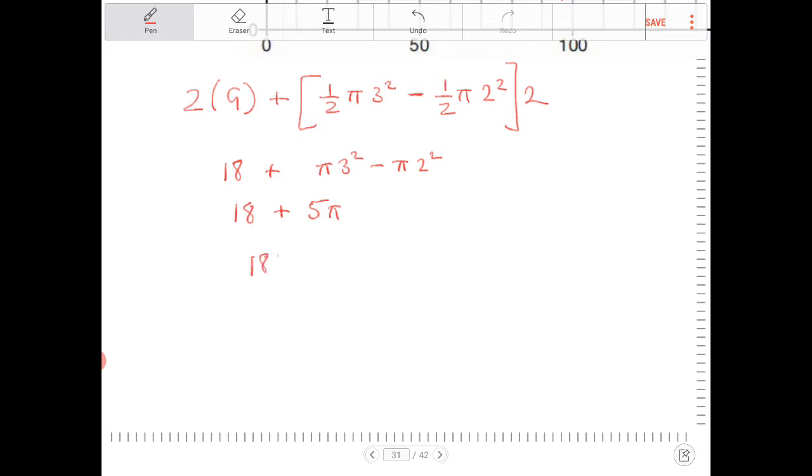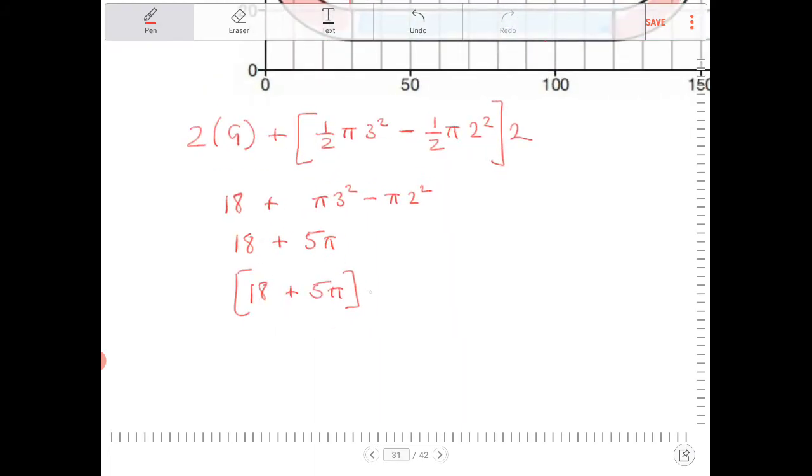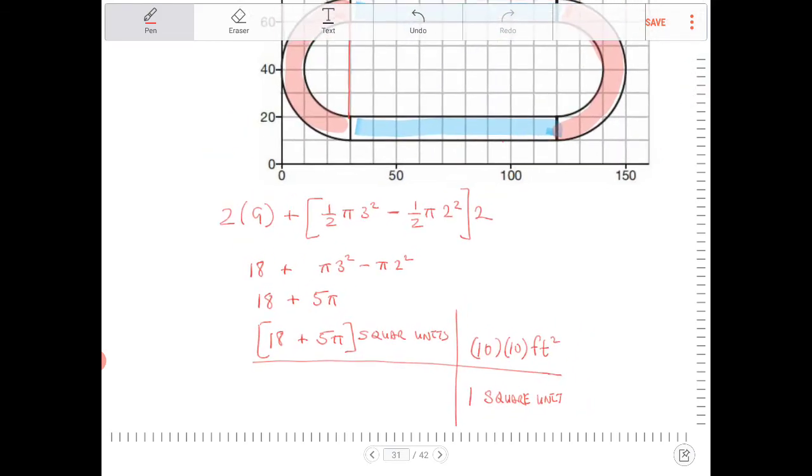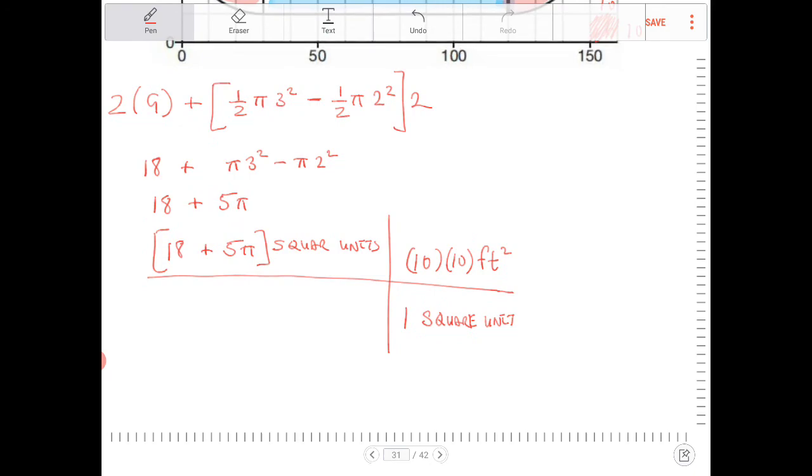So we're going to take 18 plus 5π and we're going to multiply this by, because one square unit is equivalent to how many square feet? Well, it's equivalent to 10 by 10 square feet. Because one of these little squares is 10 by 10, so that's 100 square feet. So we're going to multiply 18 plus 5π by 100.